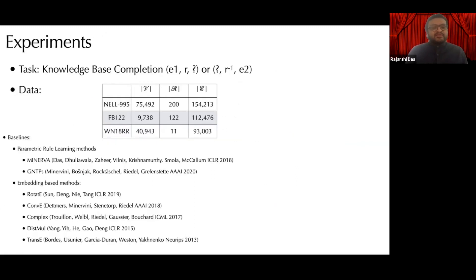Coming to the experiments, our task is knowledge-based completion in which we predict the head or tail entities given an unobserved triple. We test our model on three academic knowledge graphs. And our baselines are several state-of-the-art parametric rule learning or embedding-based methods.